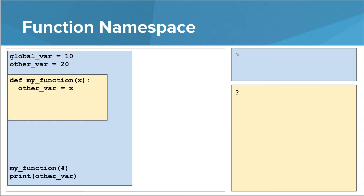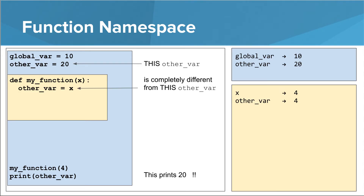What happens if inside my_function we make a new variable other_var and set it equal to x? The global namespace still has global_var and other_var, and the function namespace has its own x and its own other_var. The global other_var is completely different from the other_var inside the function. We're defining a brand new name in the function's namespace, so inside my_function, other_var refers to the local one, not the global one. Outside the function, printing other_var still gives 20 — the global one has not been affected.